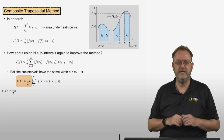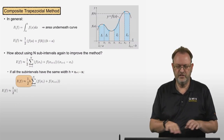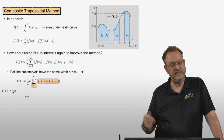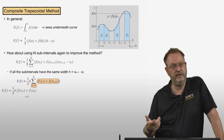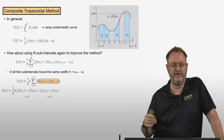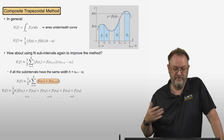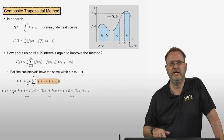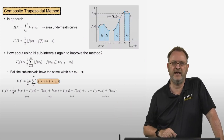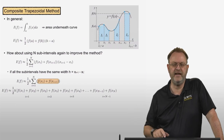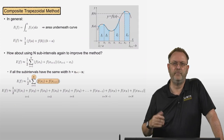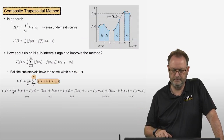Writing out the sum explicitly: one-half·h times [(f(x1)+f(x2)) + (f(x2)+f(x3)) + (f(x3)+f(x4)) + ... + (f(x_{n-1})+f(x_n)) + (f(x_n)+f(x_{n+1}))]. We can see that the interior function values — f(x2), f(x3), all the way to f(x_n) — each appear twice in this expanded sum.